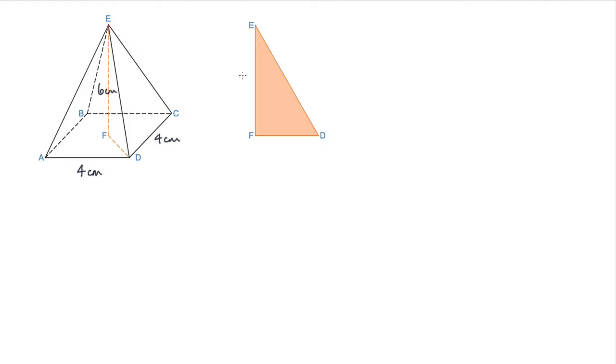We know that the height is 6 centimeters, and we're trying to find this length DE. If we have a right-angled triangle, we need to have two other sides before we can find this length DE. So we need to find length DF.